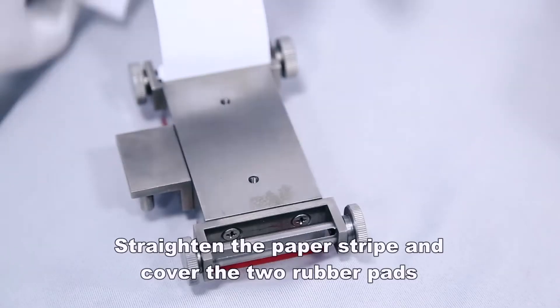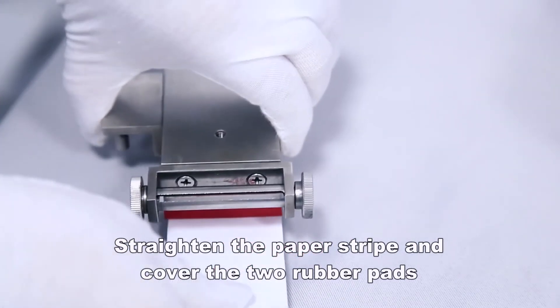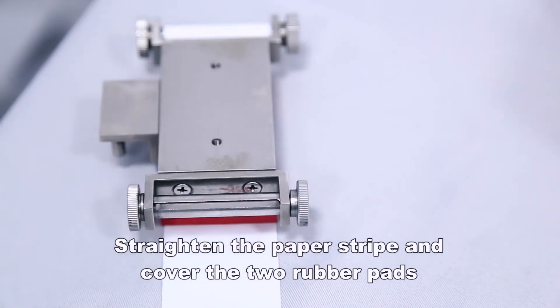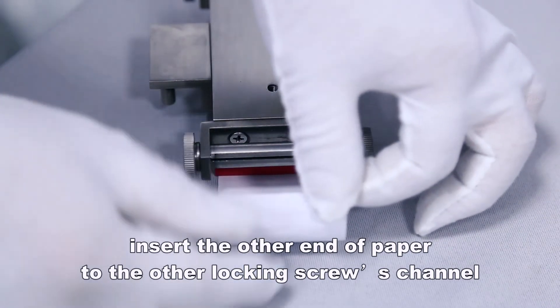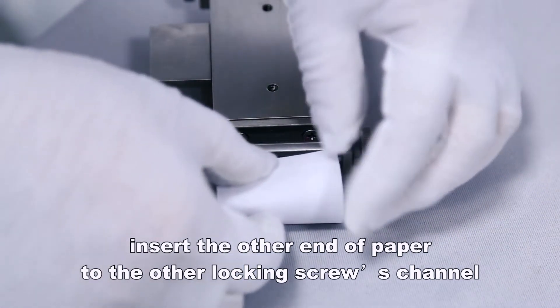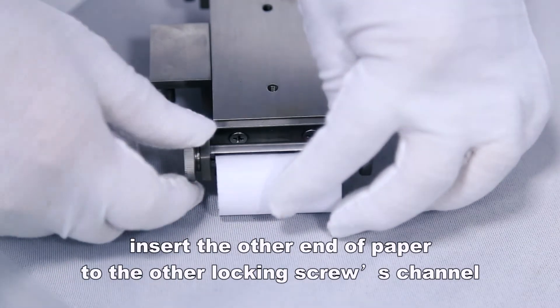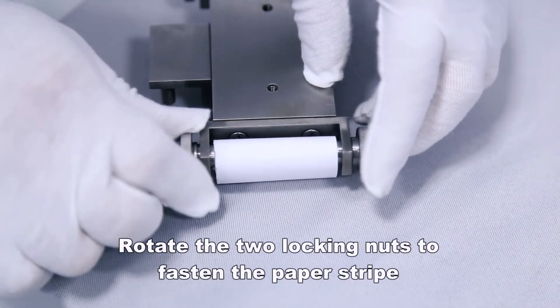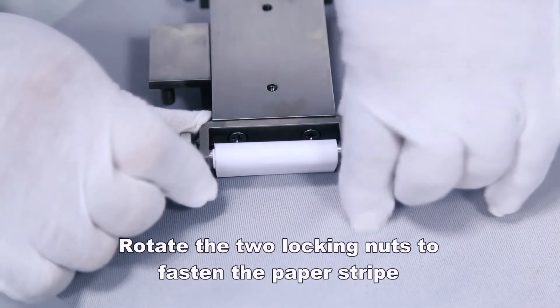Straighten the paper stripe and cover the two rubber pads. Insert the other end of paper to the other locking screws channel. Rotate the two locking nuts to fasten the paper stripe.